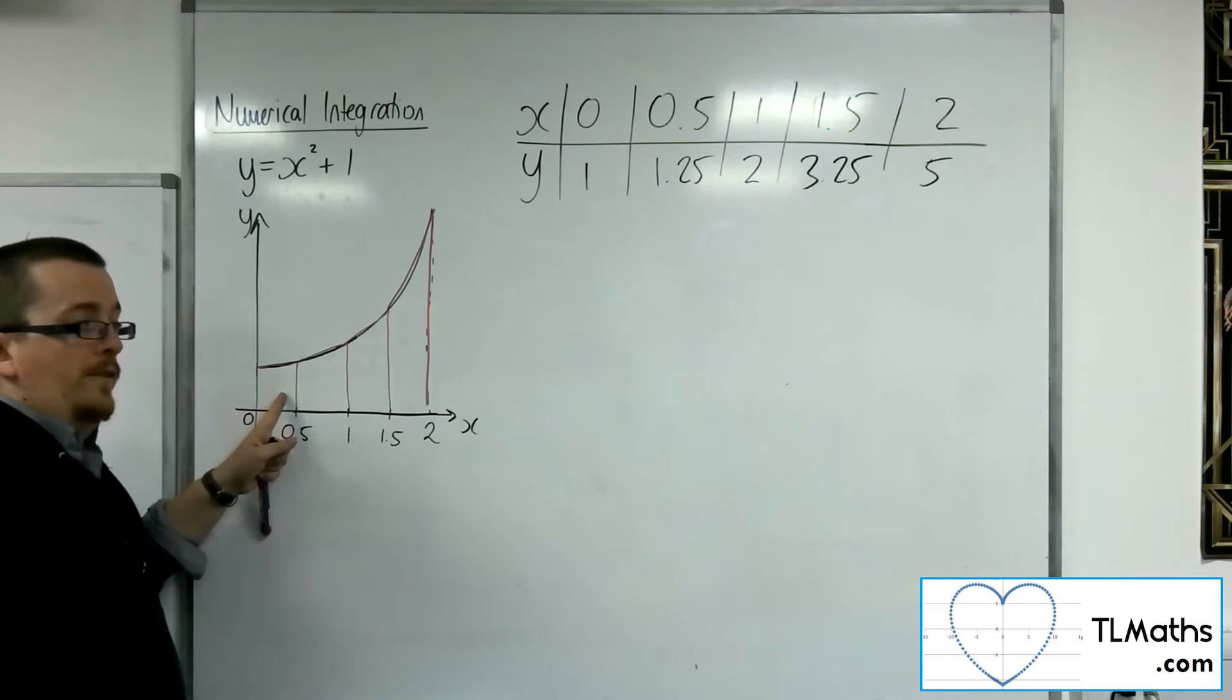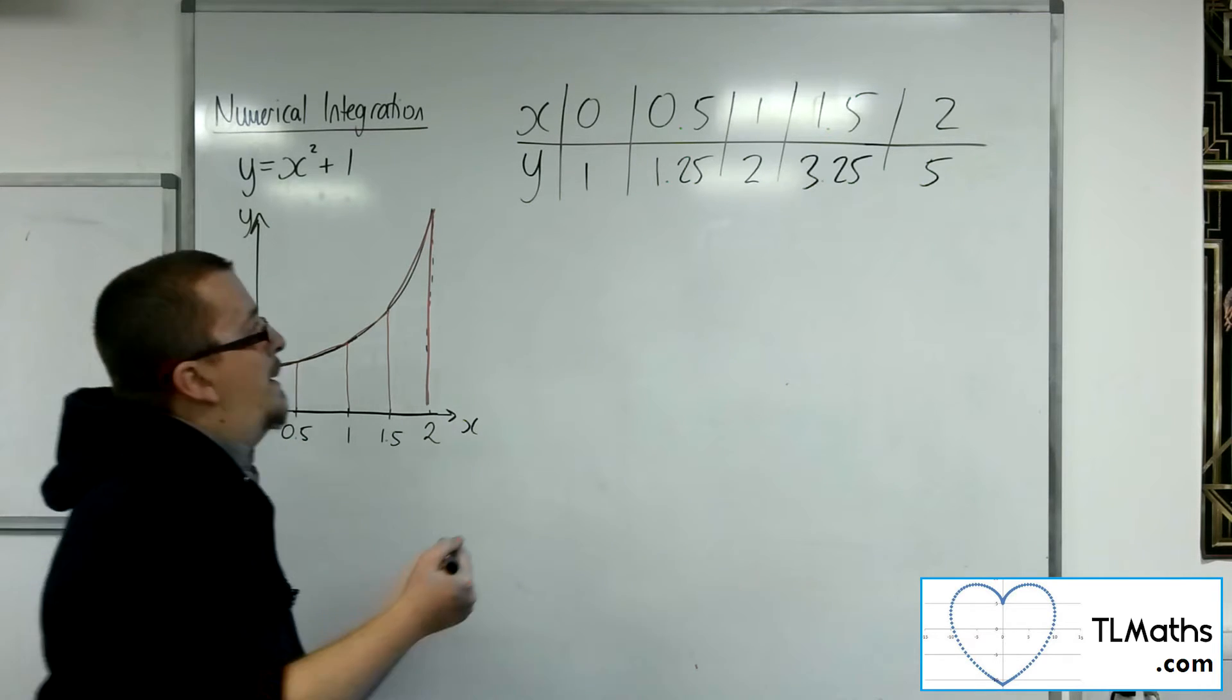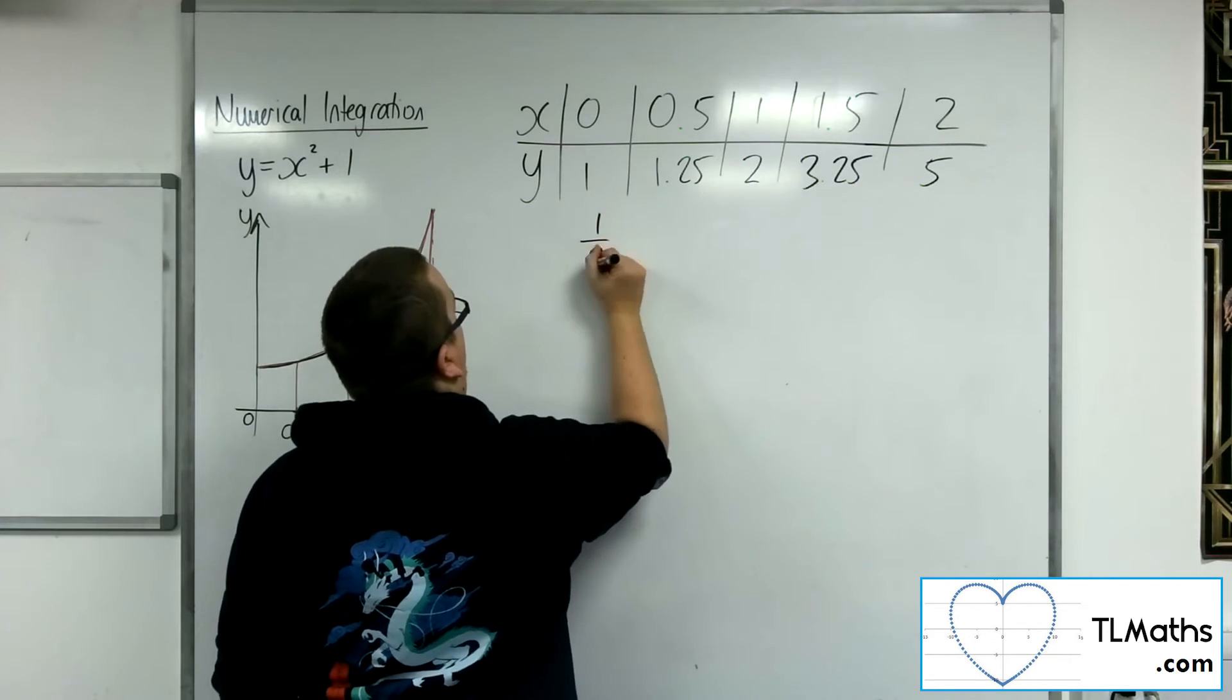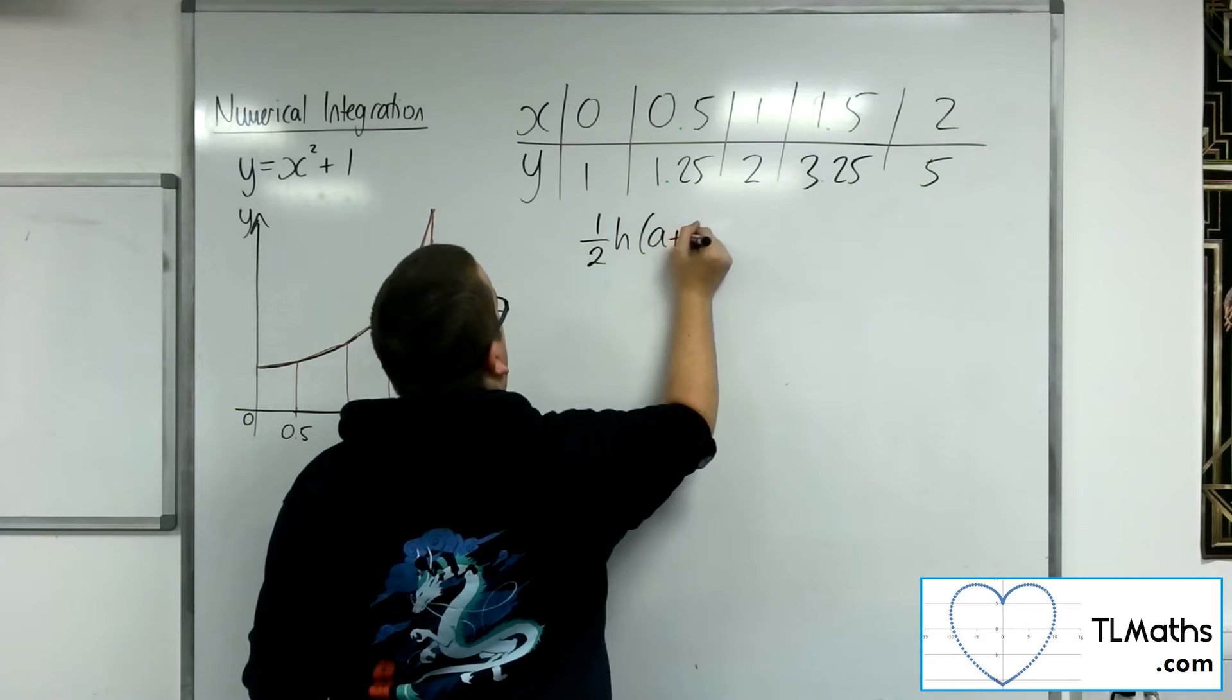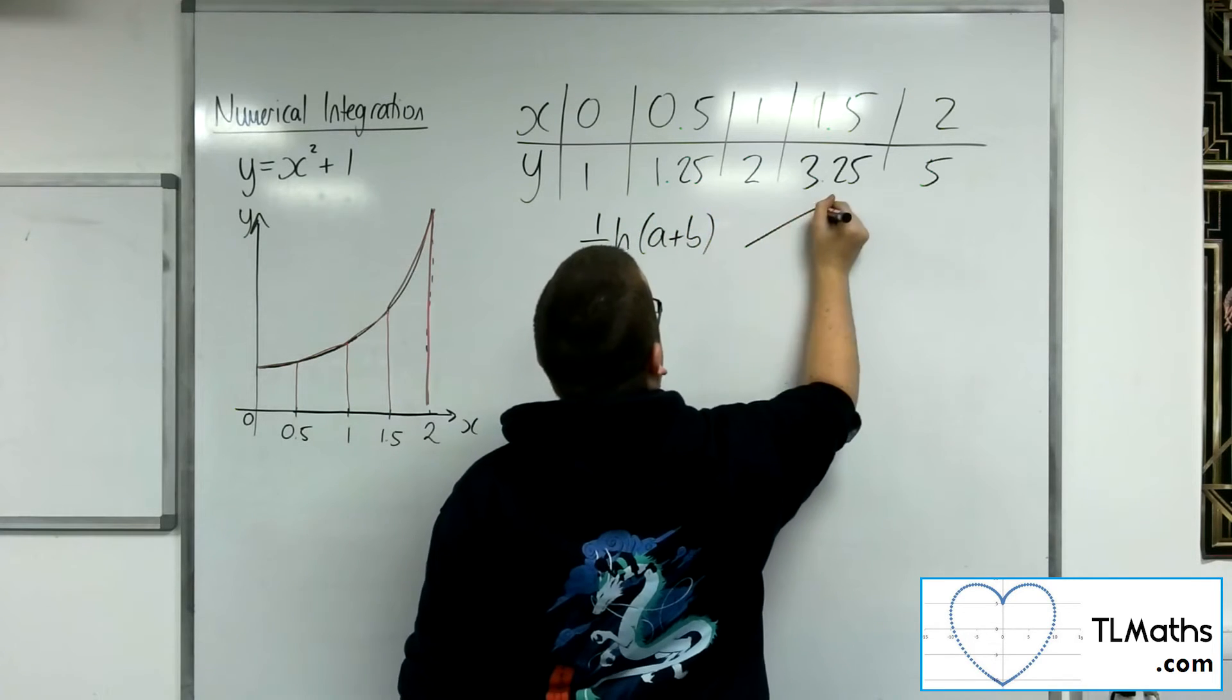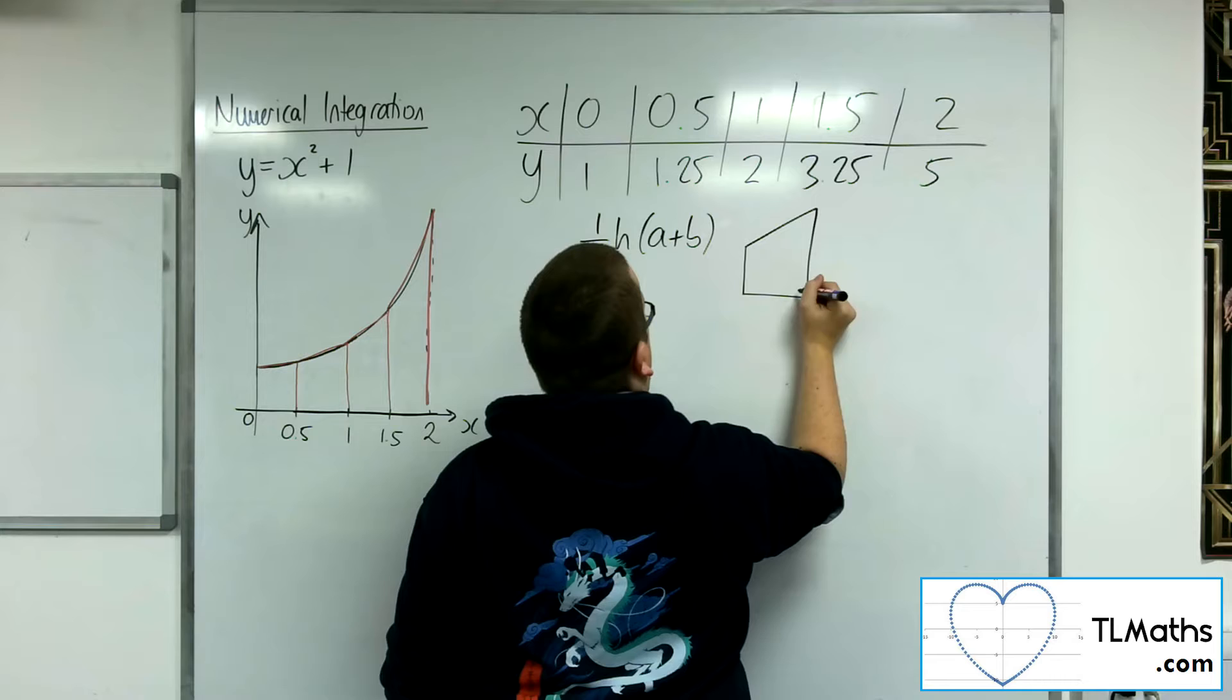Now the area of that first trapezium. Remember the area of a trapezium is 1 half h times a plus b, where a trapezium looking like that.